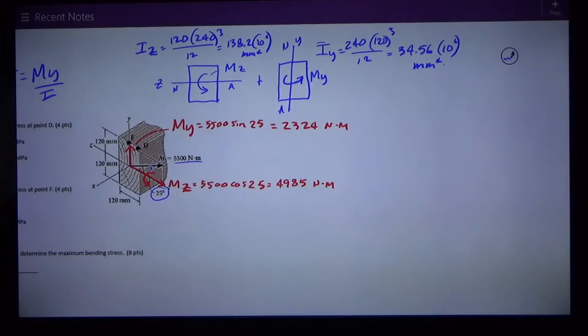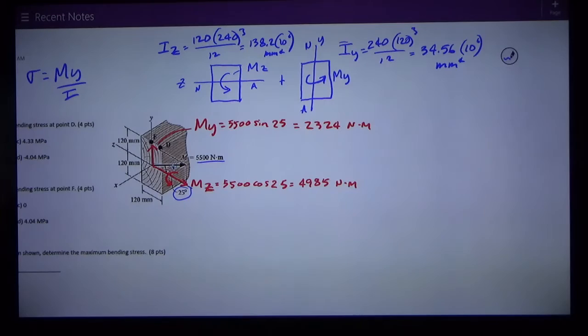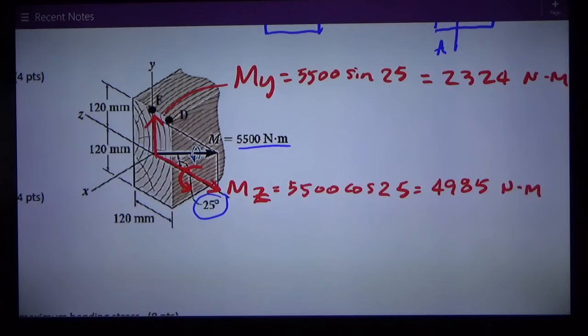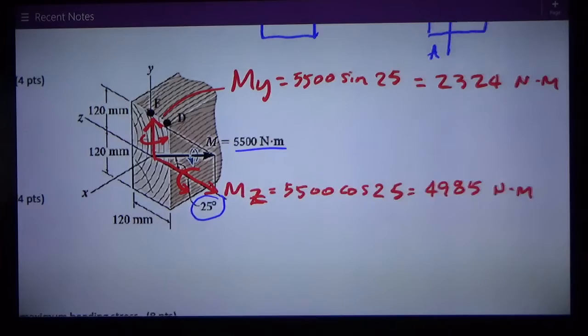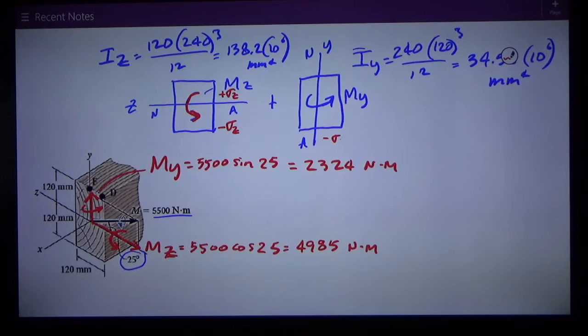Now I need to look at where each one of these moments is causing compression or tension. I use the right hand rule, point my thumb up like the My vector and that gives me rotation like this. Mz causes compression on the bottom so I have negative σz down here and positive σz on the top. My is creating compression on the right side so I have negative σy over here and positive σy over here.